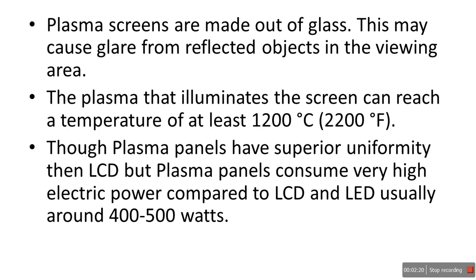Plasma screens are made out of glass, which may cause glare from reflected objects in the viewing area. The plasma that illuminates the screen can reach a temperature of at least 1200 degrees Celsius or 2200 degrees Fahrenheit — that's very high. Plasma panels have superior uniformity than LCD, but they consume very high electric power compared to LCD and LED, usually around 400 to 500 watts. They can also cause image distortion if a stationary picture is kept on-screen for too long.